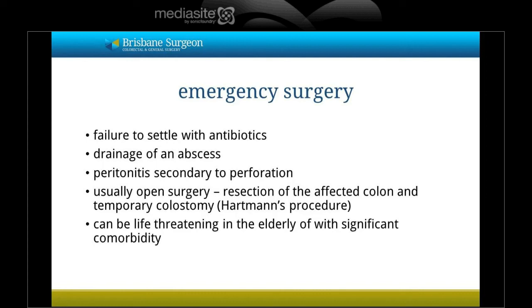In an unlucky few, diverticulitis will not settle with antibiotics, or the patient may suffer severe sequelae such as abscess formation or perforation leading to peritonitis. Under these circumstances, emergency surgery is indicated, involving resection of the affected part of the colon and formation of a temporary colostomy, a procedure known as Hartmann's. This can be life-threatening, particularly in elderly patients with significant comorbidities such as heart or chest disease. Once recovered, reversal of the Hartmann's can be undertaken — rejoining the bowel — but this requires a second major procedure.